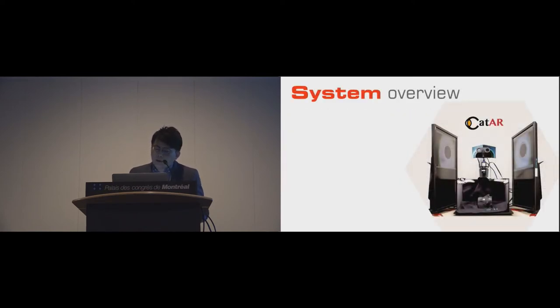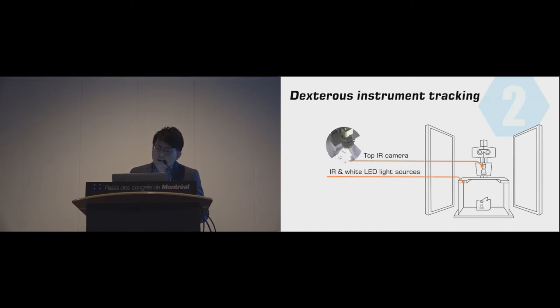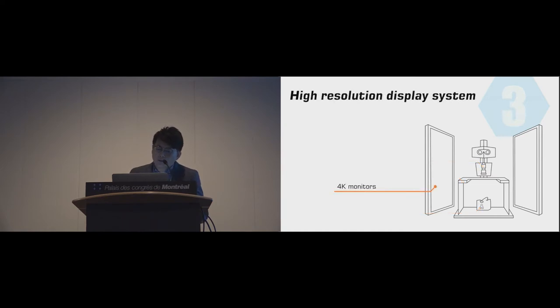Implementation. CATAR has three main parts: video see-through AR platform, dexterous instrument tracking, and high-resolution display system. In video see-through AR platform, we build realistic mannequin and eye model on the table. Above that, we set the stereo microscope camera module to capture the real images. For dexterous instrument tracking, we use only two sets of infrared cameras and light sources. One is beside the microscope module, and the other is under the eye model. After the real and virtual images are composited, the final images will be displayed on a pair of 4K monitors, and be reflected into the eyepiece by mirrors.